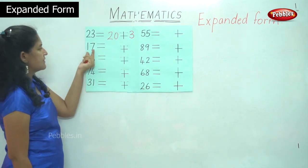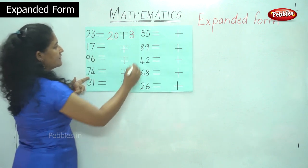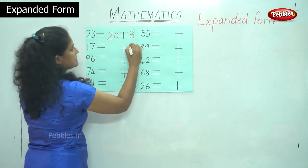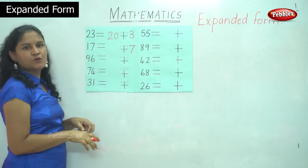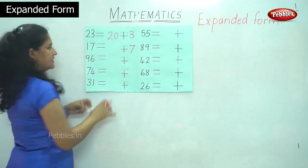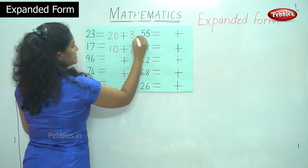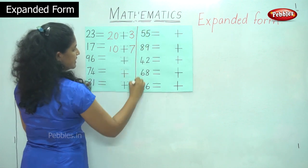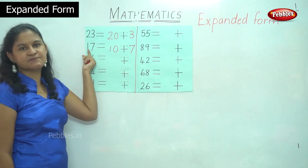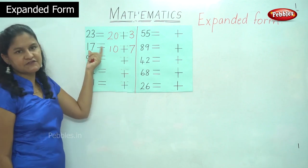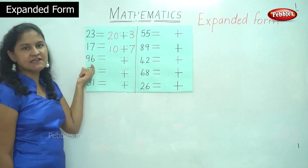The next number is number 17. In the ones place I have number 7 and in the tens place I have one 10. So one 10 is number 10. So 10 plus 7 gives you 17. This is the expanded form for the number 17.